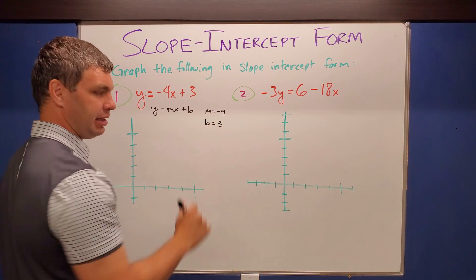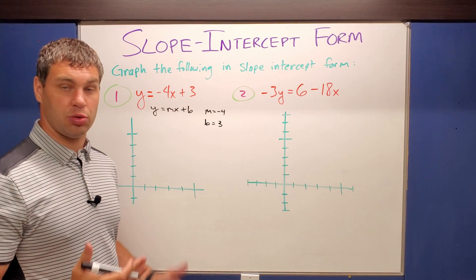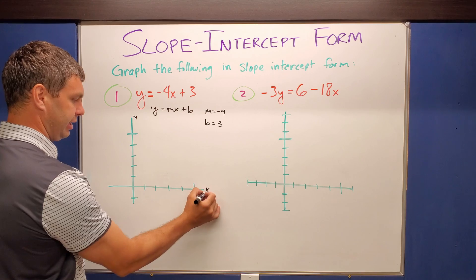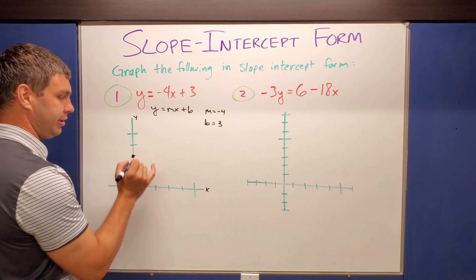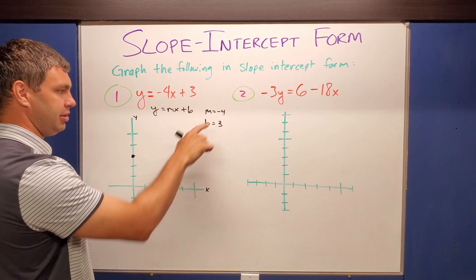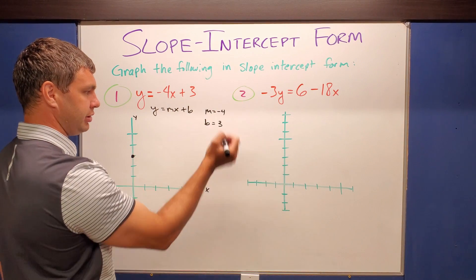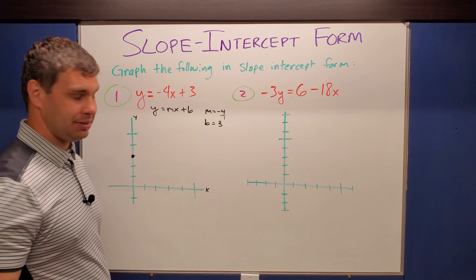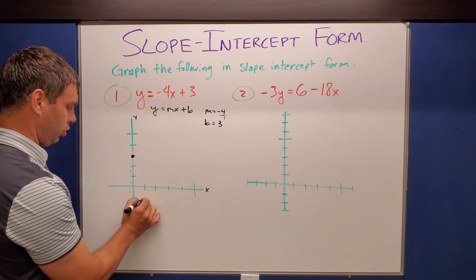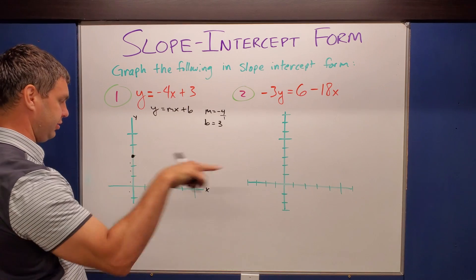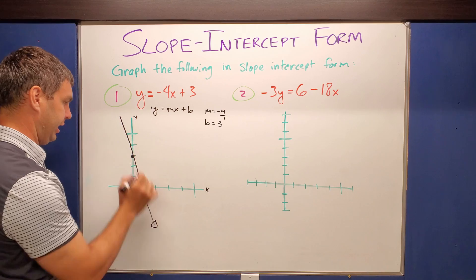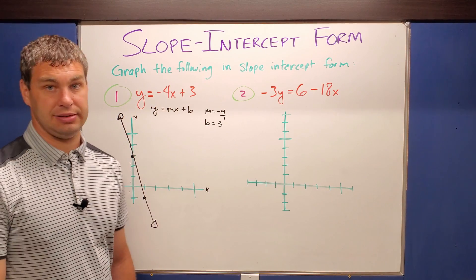So remember I said that the b stands for a y-intercept. That means it crosses the y-axis at 3 in this case. So if this is my y, that's my x, at 3, 1, 2, 3, I can put a dot right there on the y-axis because I know it's going to cross. And then from there I can just use my slope of negative 4, or remember it's rise over run. So negative 4 over 1 to go down 4, 1, 2, 3, 4 right here, and then over 1 you always run to the right. Rise over run. And I can connect those two dots, and that line is the line that represents that equation.